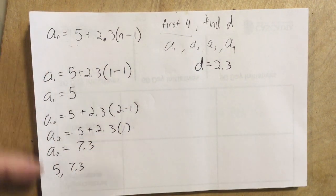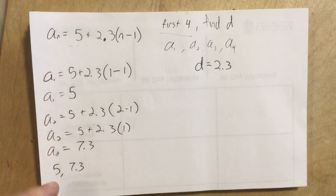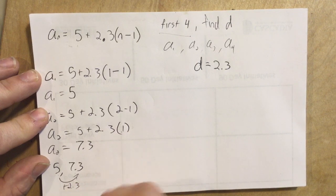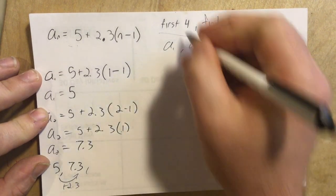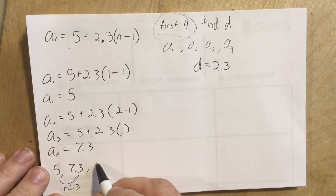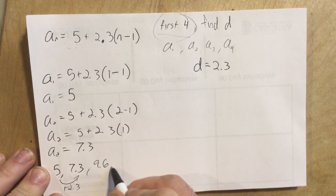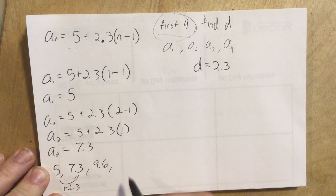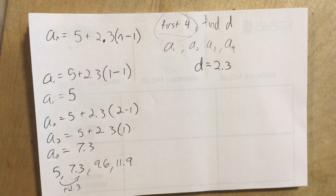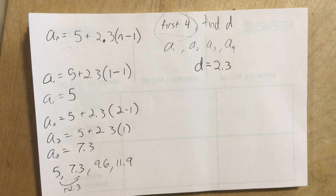And find the first 4, that's what it's asking us to do. Here we go. 2.3 again gives us 9.6. 2.3 again gives us 11.9. And those are the first 4. And that's it.